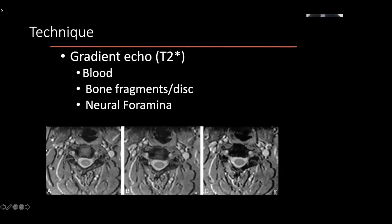Traditionally, gradient echo was also quite useful for looking at the neural foramina. On these axial cuts you can see the cord, the nerve roots, and the uncovertebral spurring and facet arthropathy contributing to narrowing of the neural foramina. On the traditional set of sequences, this was the best way to evaluate the neural foramina, though this has changed now that we have very good high-resolution 3D sequences that can be reconstructed in multiple planes.